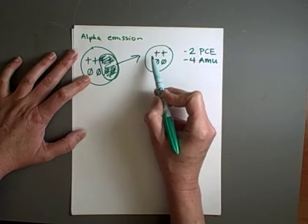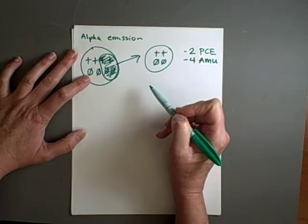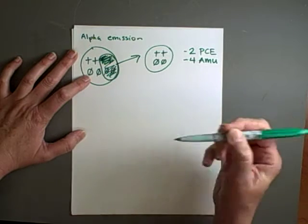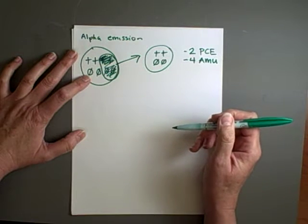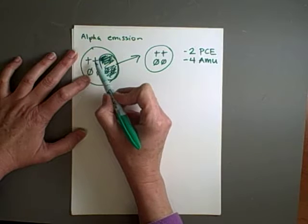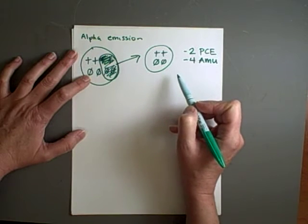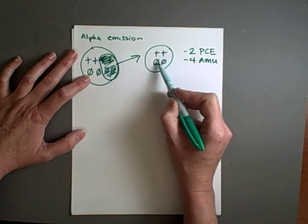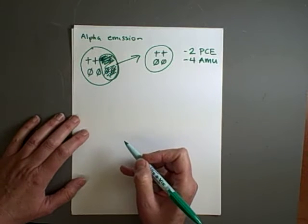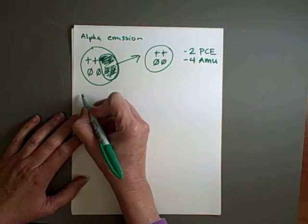Because remember, it's the number of protons that tells me what my element is. And so if I lost two protons, I'm now two protons less on the periodic chart of the elements. And both protons and neutrons have one atomic mass unit. So one, two, three, four. I've missed out or lost four atomic mass units.